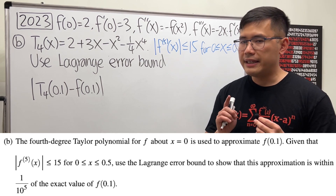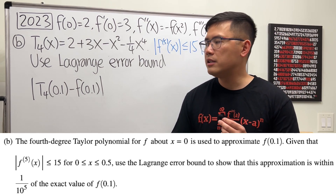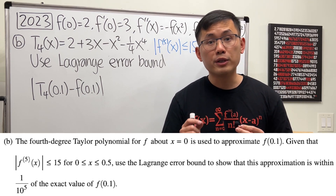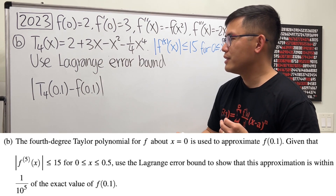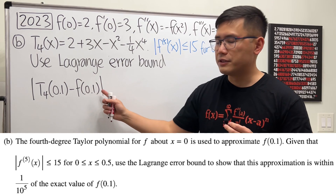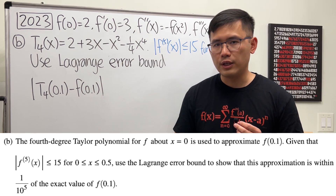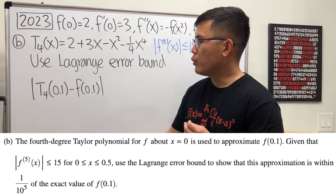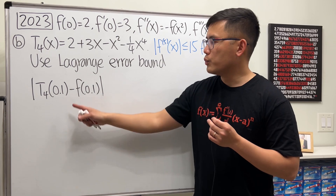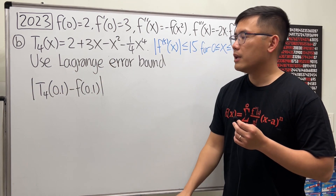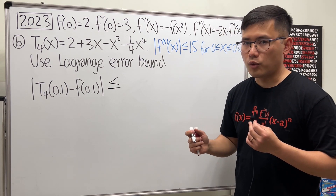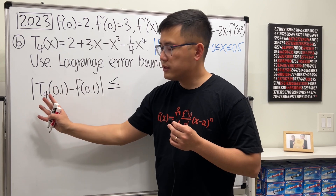Now for part B. The AP test really likes to ask either the Lagrange error bound or the alternating series error bound questions, so make sure you know both. Here we use the Lagrange error bound. We want to show that the fourth degree Taylor polynomial approximation to f of 0.1 is within 1 over 10 to the fifth power. We set it up as the absolute value of the approximation minus the actual value, and we want to show this is less than or equal to the Lagrange error bound formula.